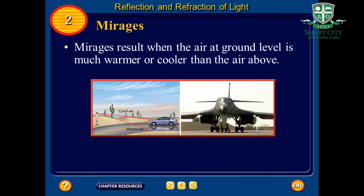Another application of refraction is the mirage. Have you ever traveled in a car and seen what looked like a pool of water on the road ahead? As you got closer, the pool of water seemed to disappear. What you saw was a mirage. A mirage is an image of a distant object that is made when light is refracted through air layers of different densities. As discussed before, the speed of a wave depends on different factors, one of which is the temperature of the medium. The higher the temperature of the medium, the higher the speed of the wave.